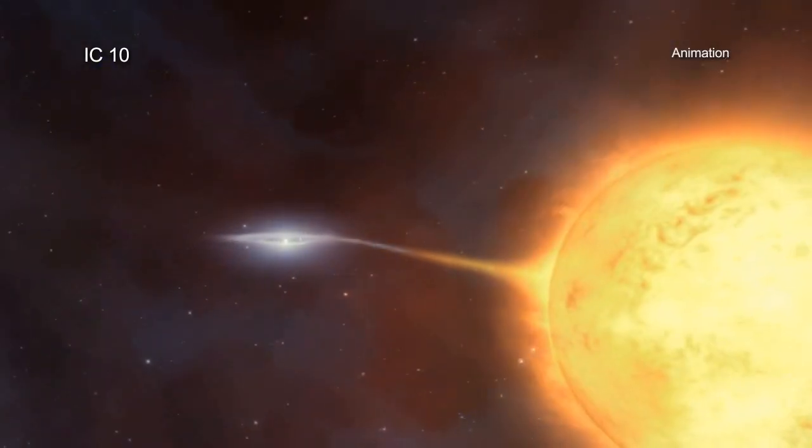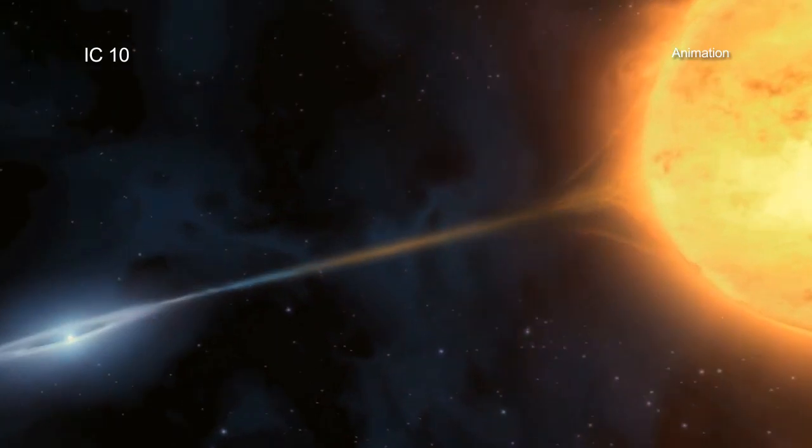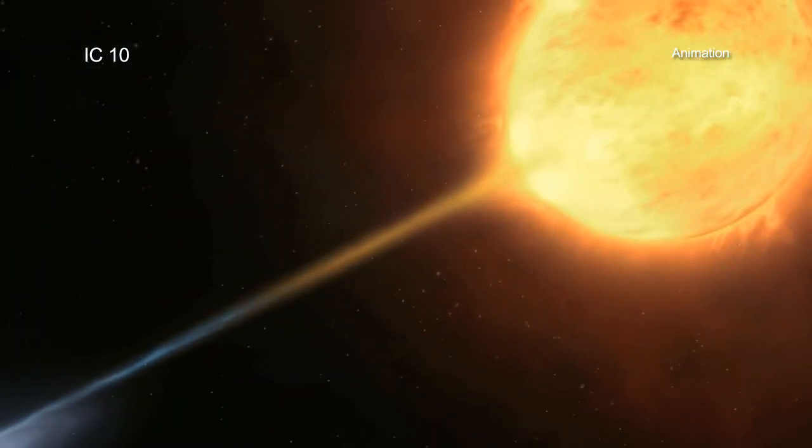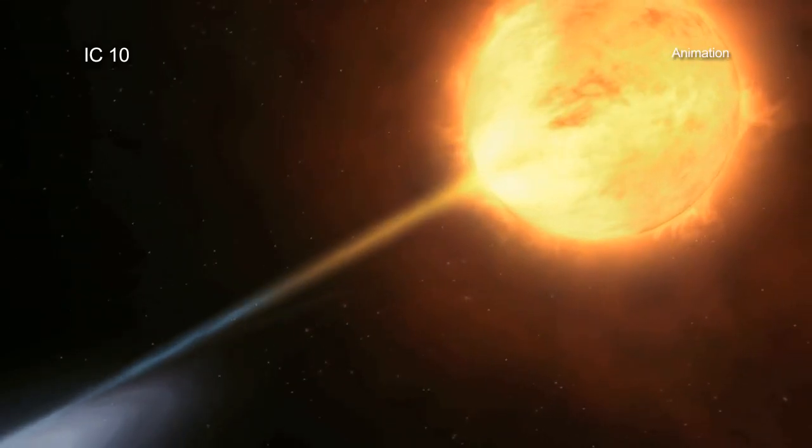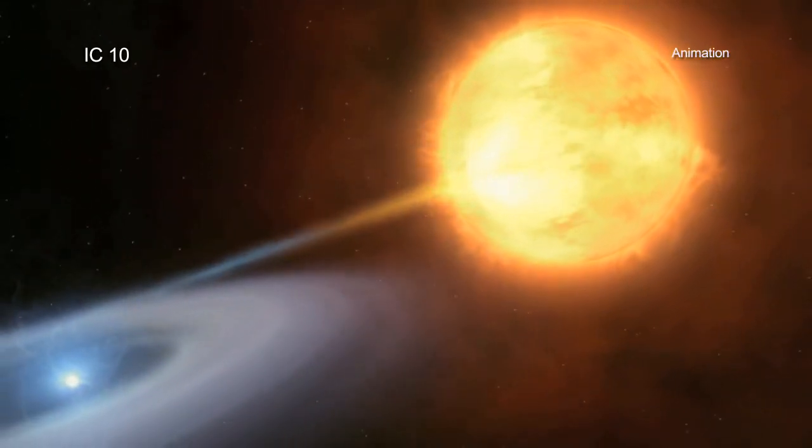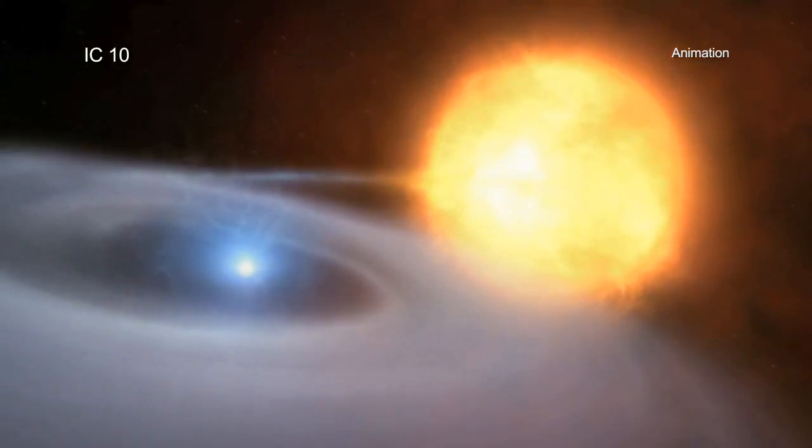As a massive star orbits around its compact companion, either a black hole or neutron star, material can be pulled away from the giant star to form a disk of material around the compact object. Frictional forces heat the in-falling material to millions of degrees, producing a bright X-ray source.